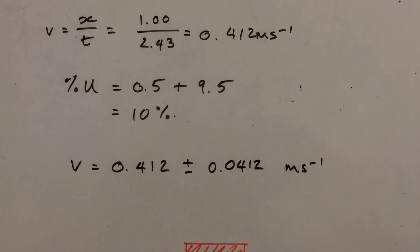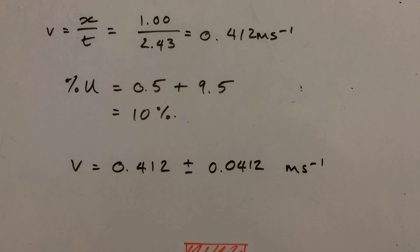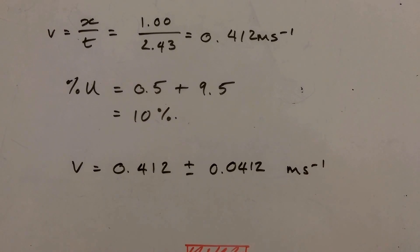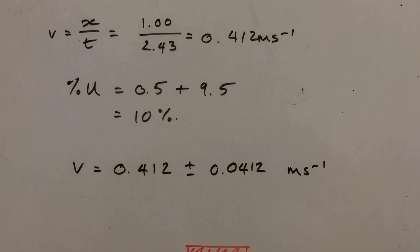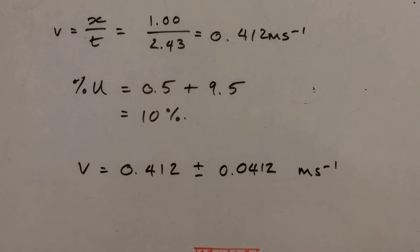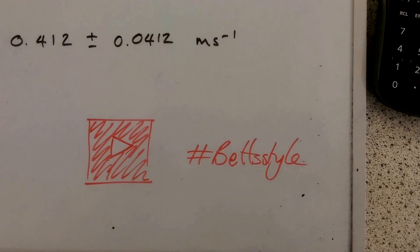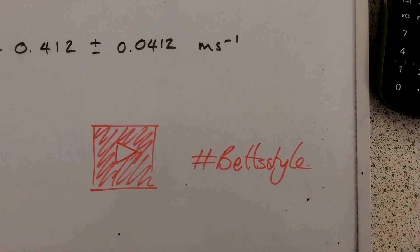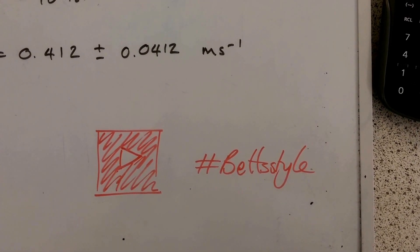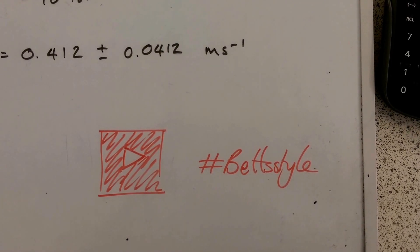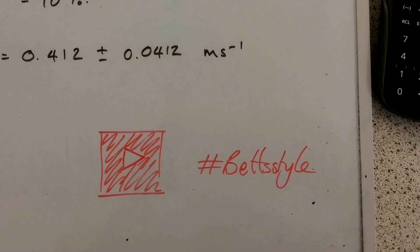We're saying that the true value for the velocity is somewhere in the range 0.412 plus or minus 0.0412. I hope that helped you understand your errors and uncertainties, and you can calculate them now. If you like that video, please hit like or subscribe. And when you're telling your friends, use the social media hashtag BetStyle. Thanks a lot.